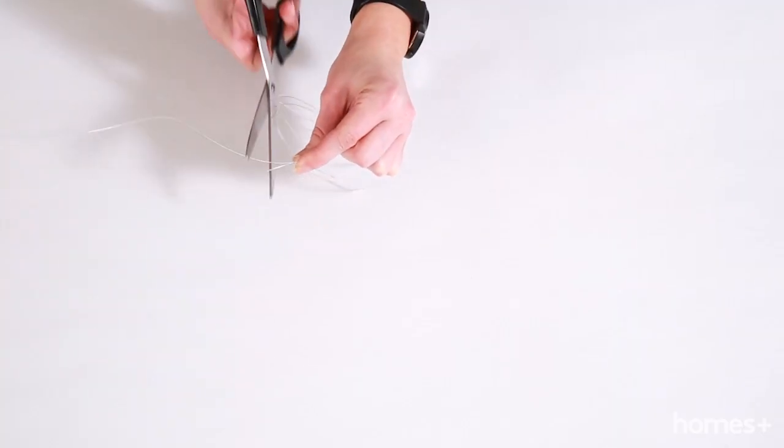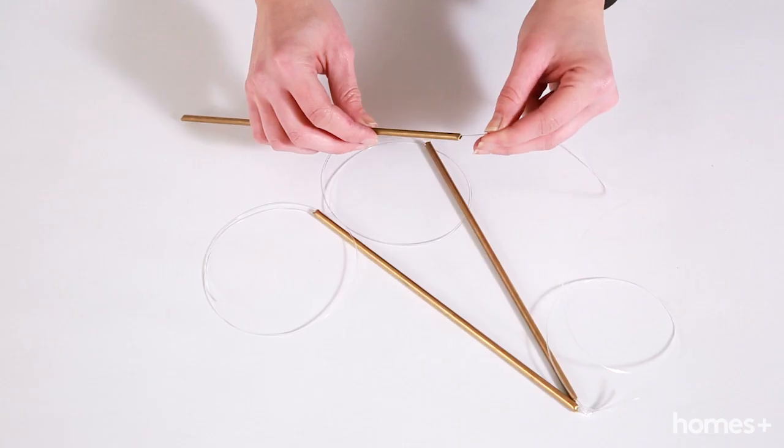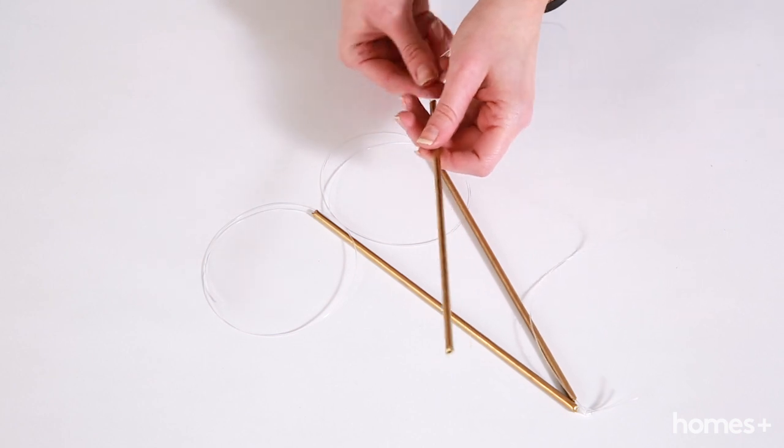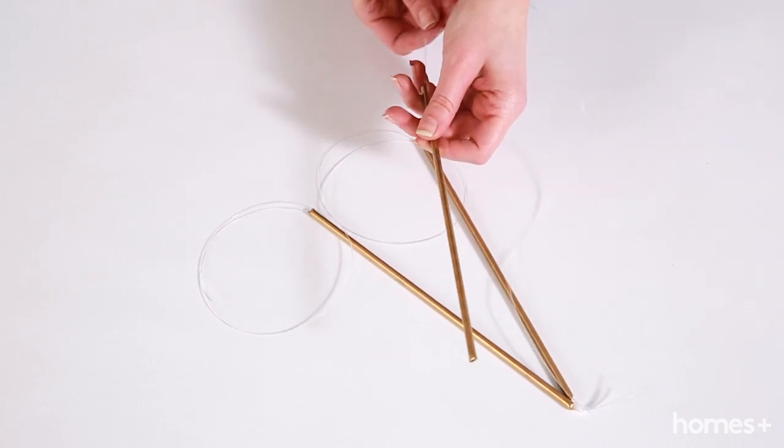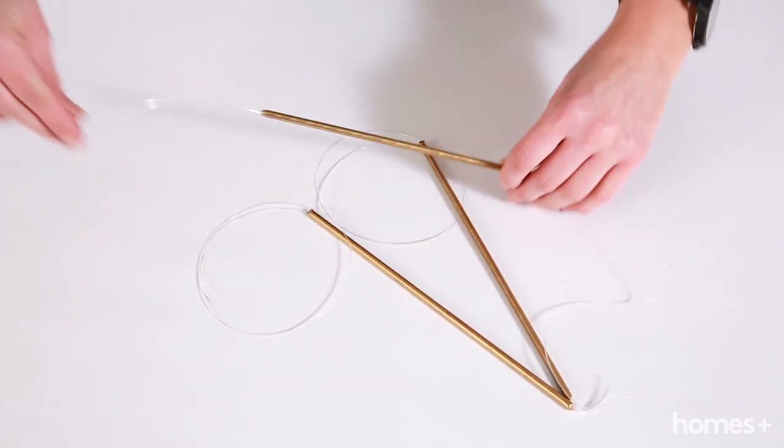Cut 3 long strands of twine and thread each through one of the longer pieces of tubing, leaving plenty of excess thread. Gather them together at one end and tie a knot so they form a little tripod.